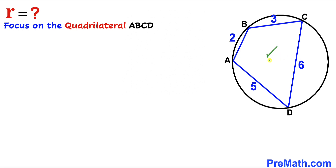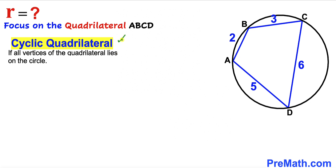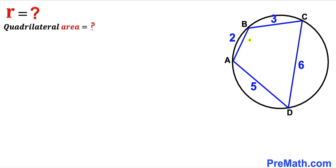The small circle has disappeared and we are going to focus on this quadrilateral and the big circle. Let's recall the definition of a cyclic quadrilateral: if all the vertices of the quadrilateral lie on the very same circle. In our case, all the vertices of quadrilateral ABCD lie on the circle. Now we are going to calculate the area of this cyclic quadrilateral.